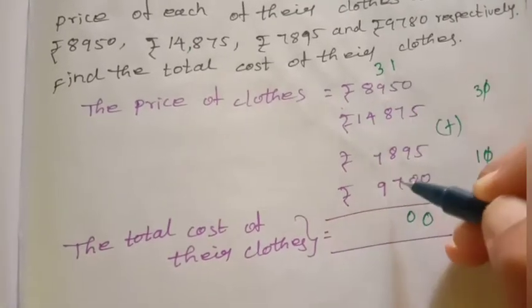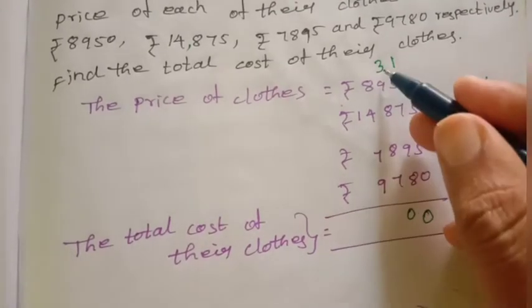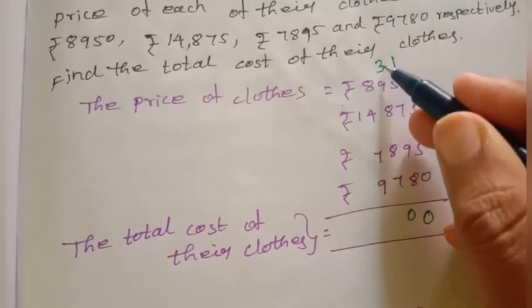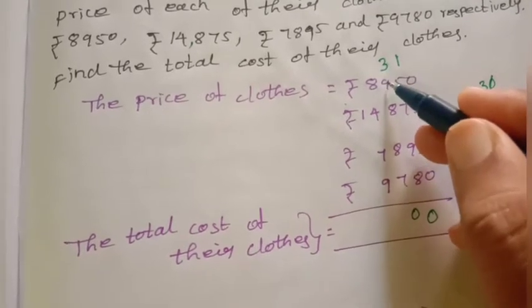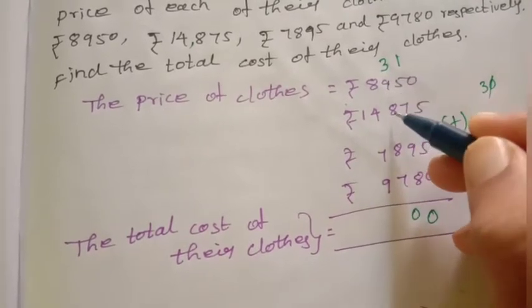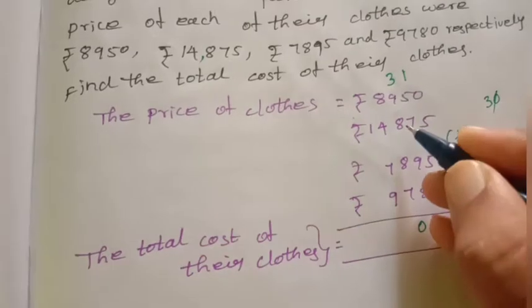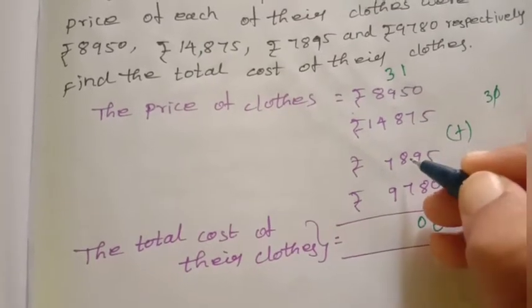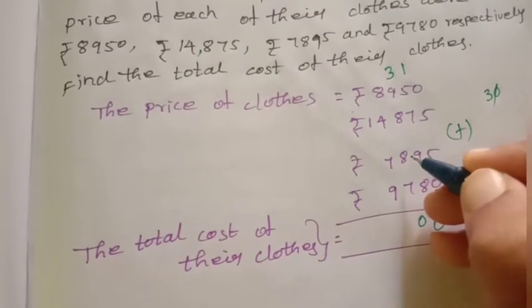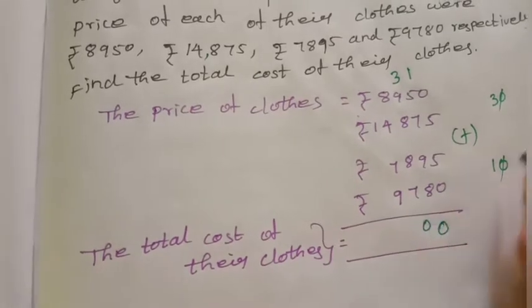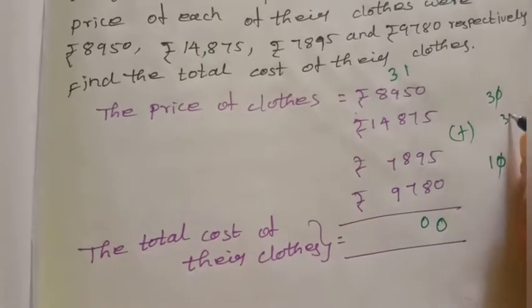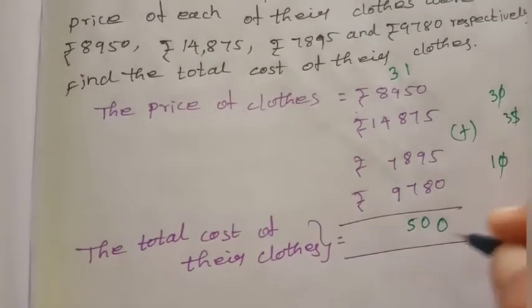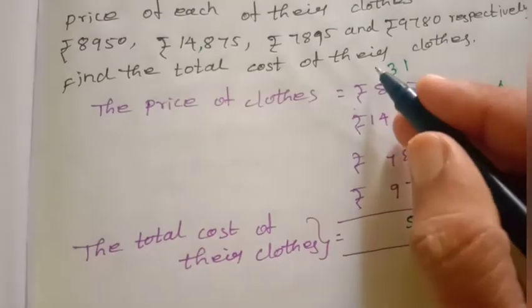Now add: 7 plus 3 is 10, plus 9 is 19, plus 8 is 27, plus 8 is 35. Write 5 in place, remaining 3, next digital.